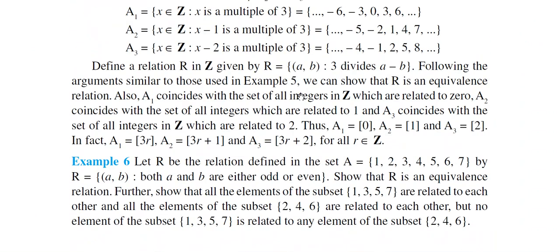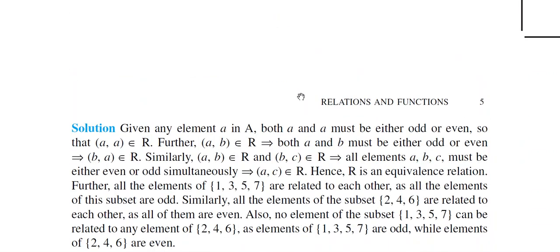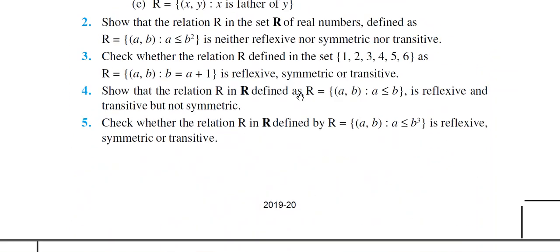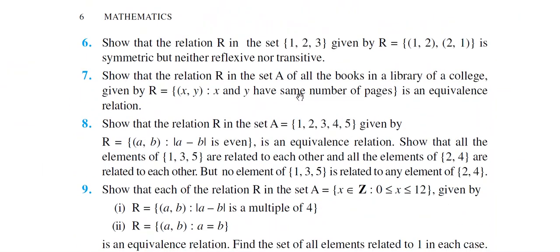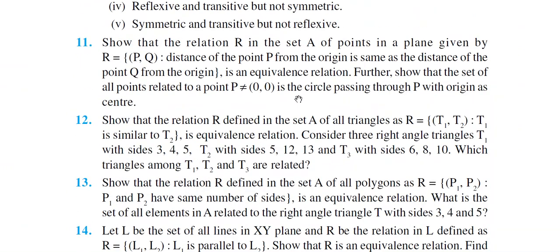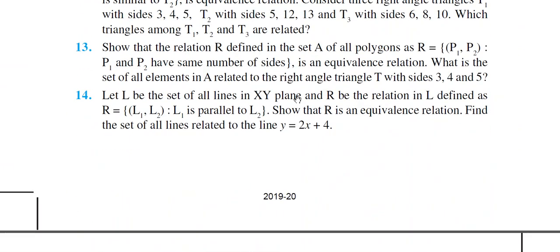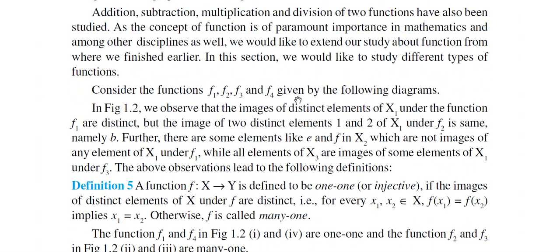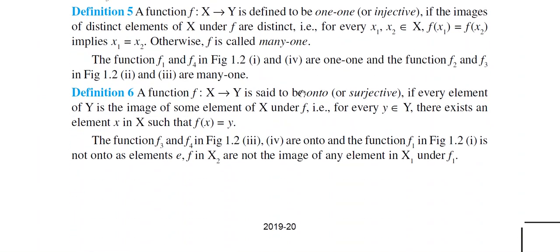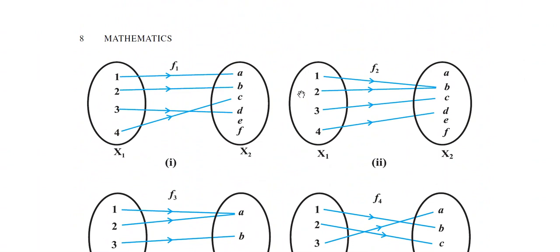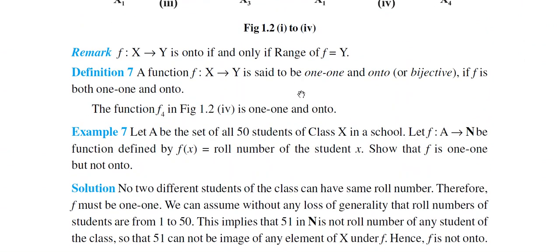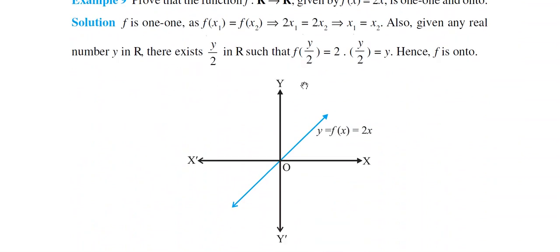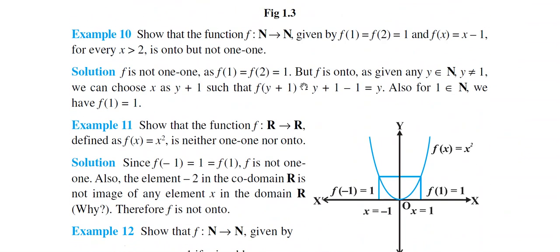One-one function is also called injective, and onto is also called surjective. And if a function is both one-one and onto, then it is called a bijective function. So the topic of type of functions was going on, and definitions of one-one and onto functions were discussed. Examples 7, 8, 9, and 10 have already been covered.